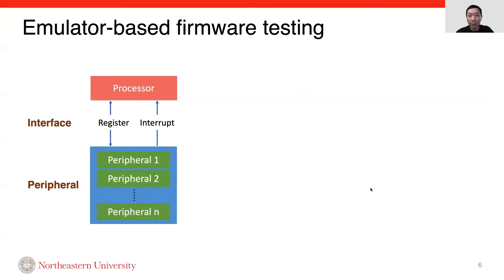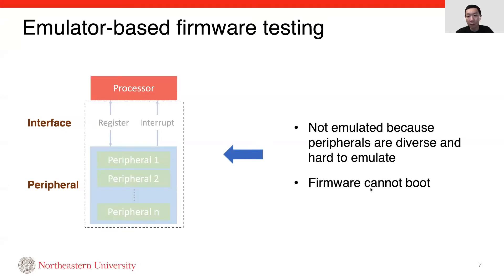The other solution is testing firmware in an emulator. The emulator should emulate MCU components, including processor, peripheral, and the interface between the two. There are two types of interface: register and interrupt. It's worth noting that registers are defined by peripherals for all purposes — they are not CPU registers. However, emulators do not emulate the peripherals, because peripherals are diverse and hard to emulate. As a result, firmware cannot boot in the emulator.